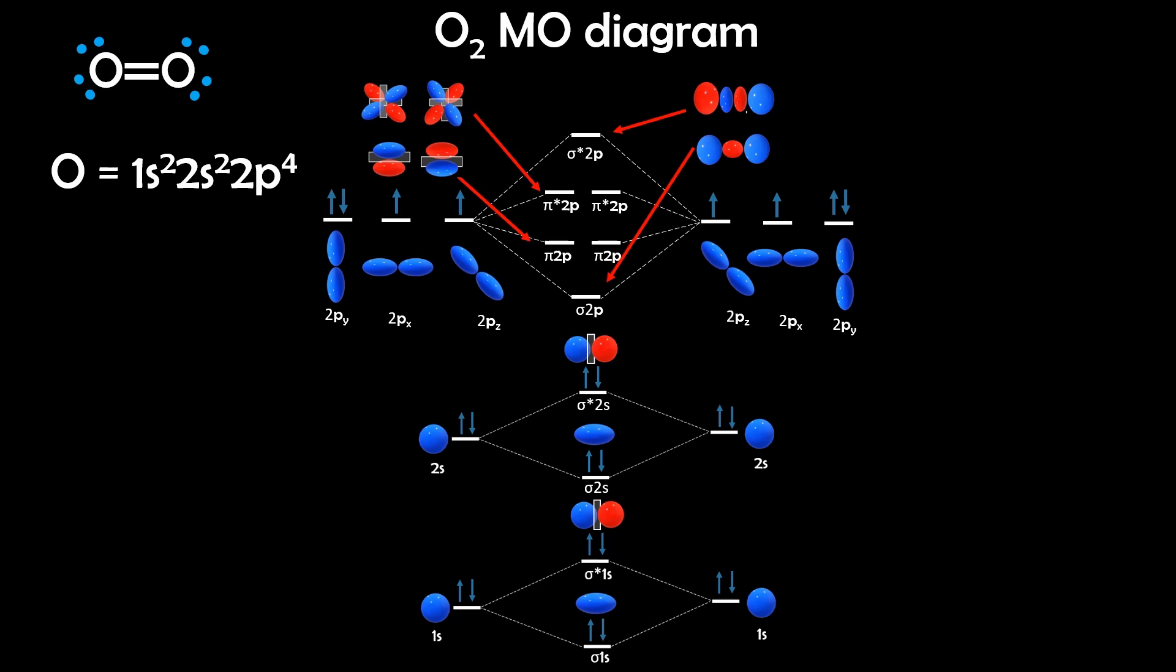So filling in the diagram with the electrons according to the Aufbau principle, we find two unpaired electrons in the antibonding pi orbitals. And this explains why oxygen is paramagnetic, meaning it has slight magnetic behavior, and why it's so reactive, because it has these two unpaired electrons in this high-energy orbital.